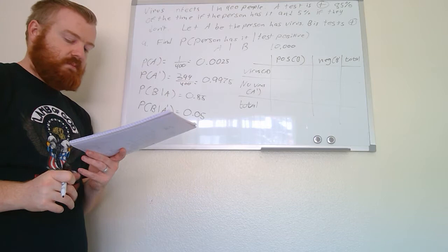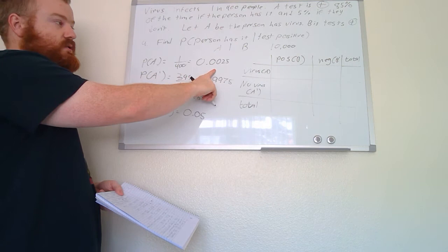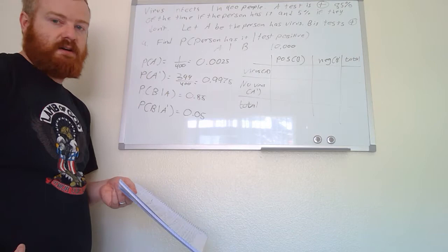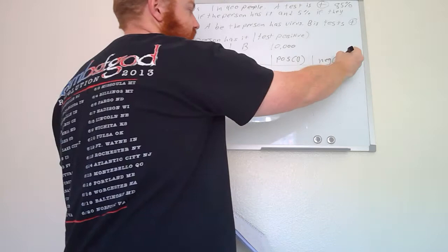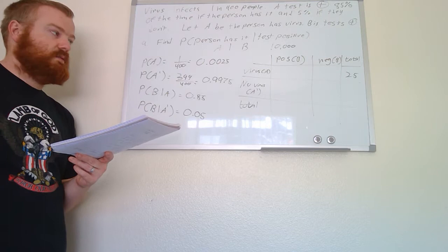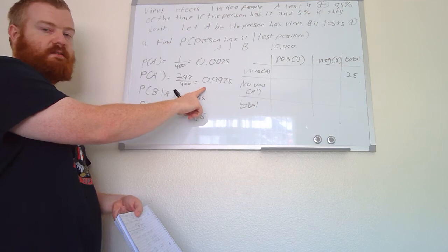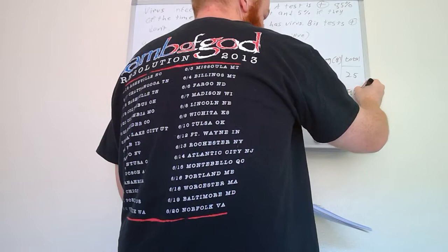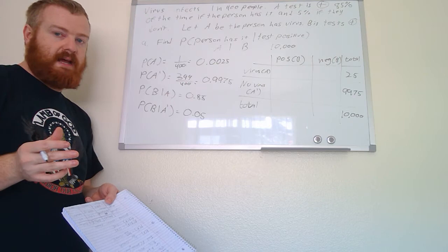If we multiply each probability by 10,000 that gives us a whole number of people. The total number of people who actually have the virus was 0.0025, so 10,000 times 0.0025 gives us 25 people who have the virus — including those who test positive and those who test negative. Therefore the number who don't have the virus is 10,000 minus 25, or 0.9975 times 10,000, which gives us 9,975 people. The grand total is 10,000 — just an imaginary number we're making up.